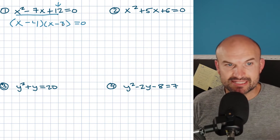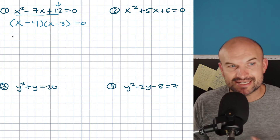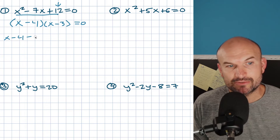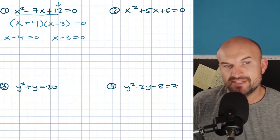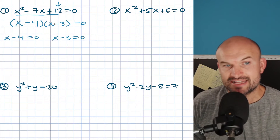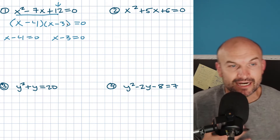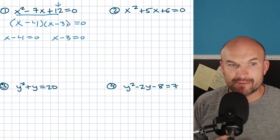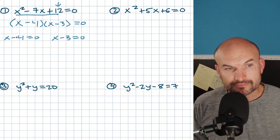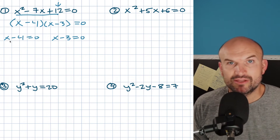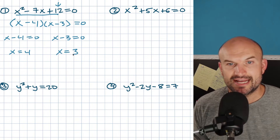Now I have this times this equals zero. If one of these was equal to zero, everything equals zero. So I can set both expressions equal to zero — that is what the zero product property allows us to do. If x is 4, that makes the whole equation zero; if x is 3, that makes the whole equation zero. So both solutions could be true. Now I only have one variable, so I can use inverse operations to solve. I get x equals 4 and x equals 3.